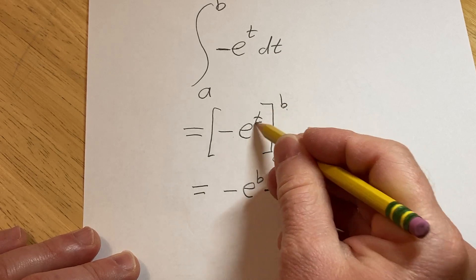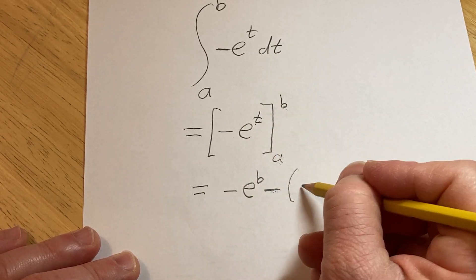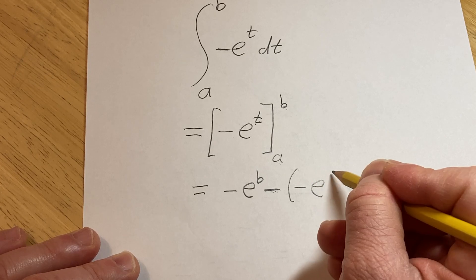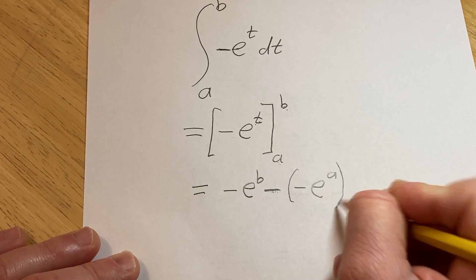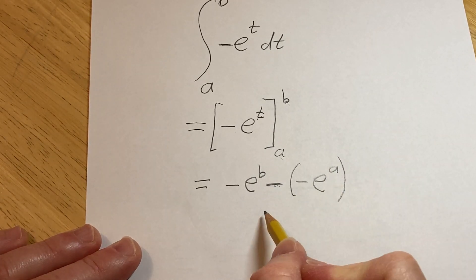The minus here is from the formula. So it's always plug in the number, subtract, and then plug in the number. So it'll be minus e to the a. Very, very sneaky, right? You've got to be very, very careful here.